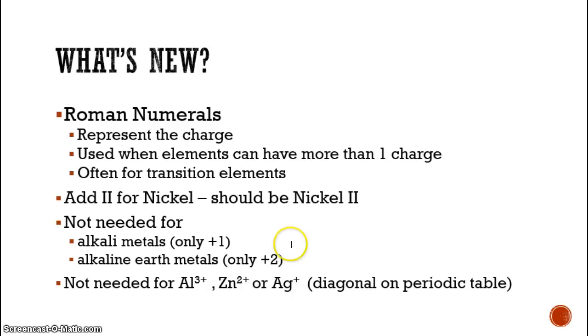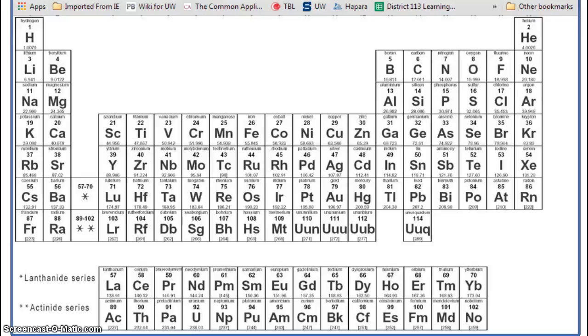So, alkali metals don't need a Roman numeral. Alkaline earth metals don't need a Roman numeral. And then these three elements, which also only have one charge, don't need a Roman numeral. That's aluminum, zinc, and silver. One way to remember aluminum, zinc, and silver is their position on the periodic table. They make this diagonal here. Aluminum is plus three, zinc is plus two, and silver is plus one. So these three do not need Roman numerals.